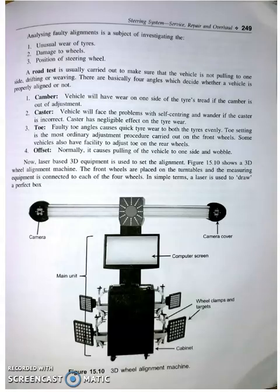Analyzing faulty alignment involves investigating the unusual wear of tires, damage to wheels, and position of the steering wheel. A road test is usually carried out to check that the vehicle is not pulling to one side, drifting, or weaving.